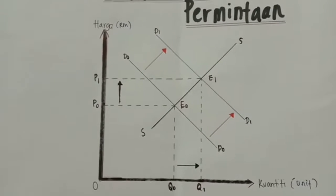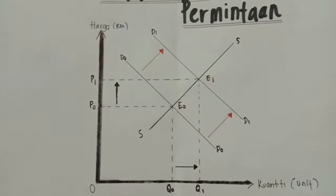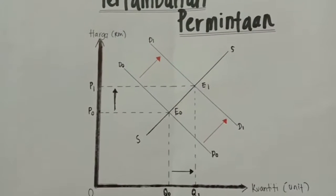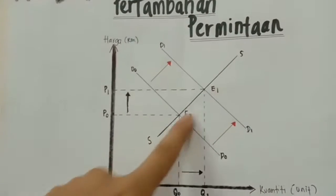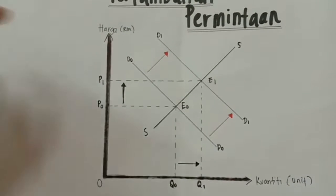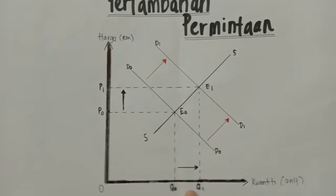Manakala kuantiti keseimbangan akan bertambah dari Q0 ke Q1. Kesimpulannya, pertambahan permintaan dengan penawaran yang tetap akan menyebabkan harga keseimbangan pasaran meningkat dan kuantiti keseimbangan pasaran bertambah.